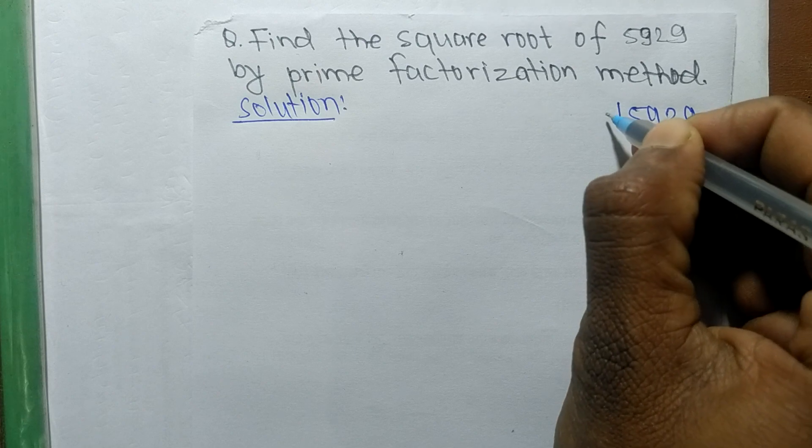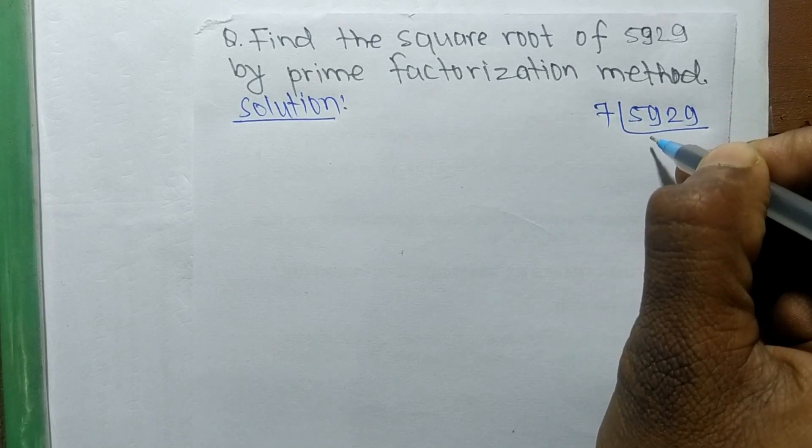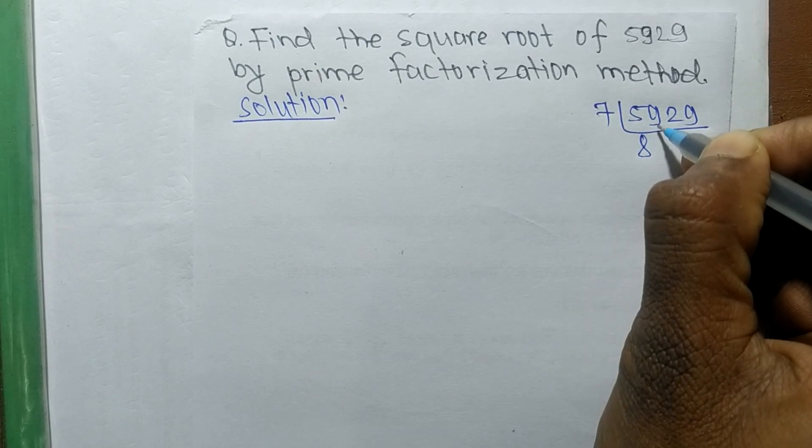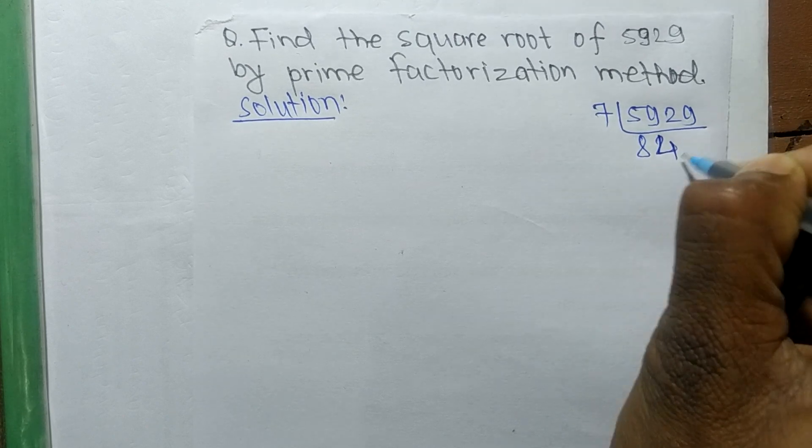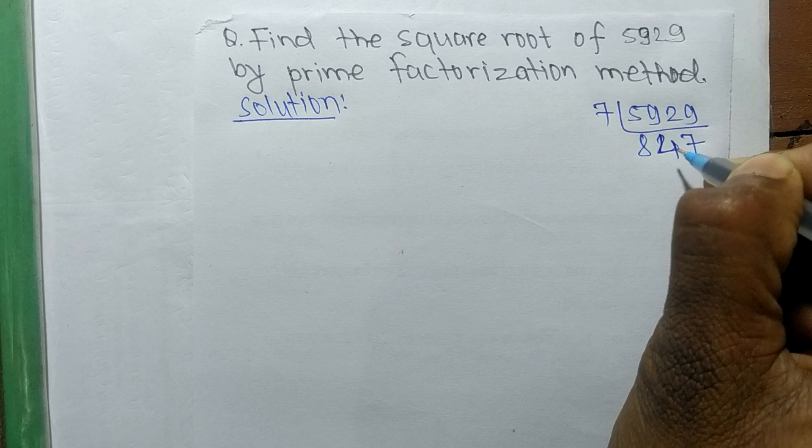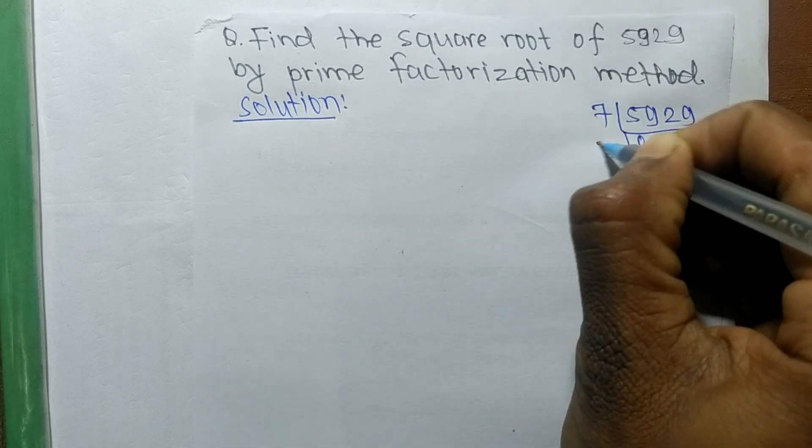So it is divisible by 7. So 7 times 8 means 56, 7 times 4 means 28, and 7 times 7 means 49.